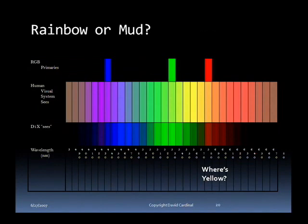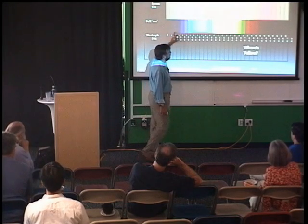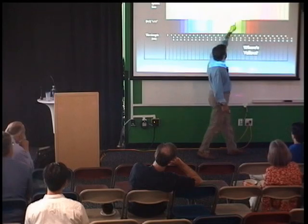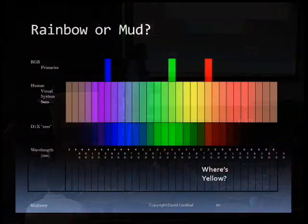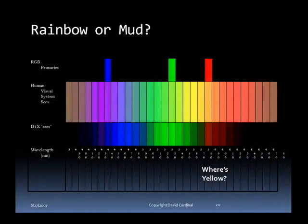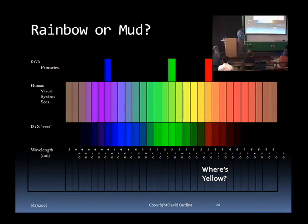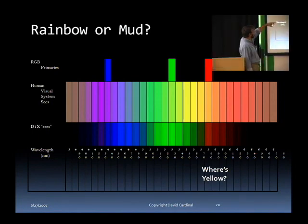For fun we plotted the actual camera color response all the way through the spectrum — this is what a D1X actually sees. There's no point at which the camera sees anything that looks yellow, so the firmware or raw processor has to figure out from colors that look like this that they're really supposed to look like that. That matrix transformation is pretty magical — it takes the camera's skewed color space and turns it into something usable.